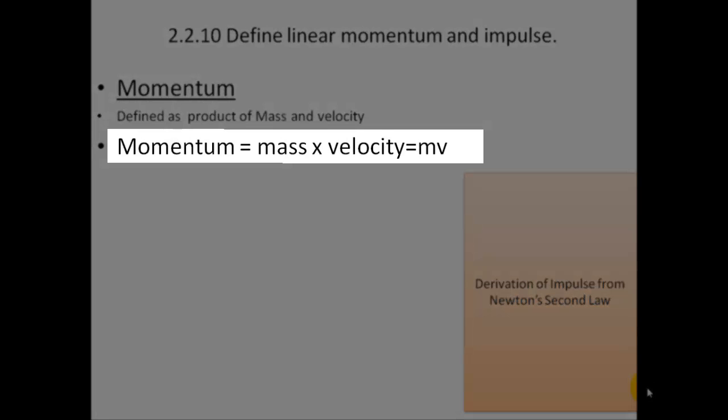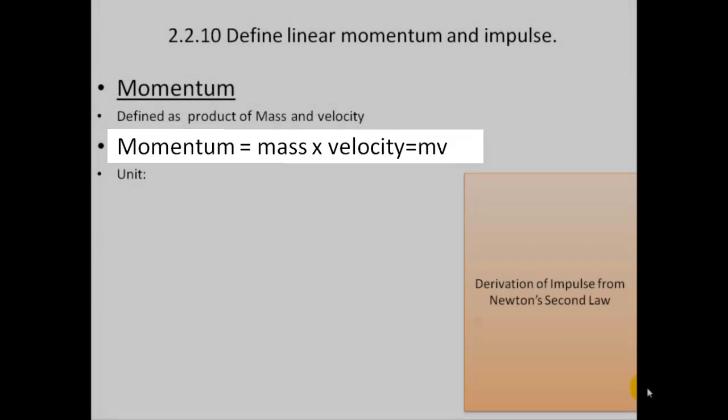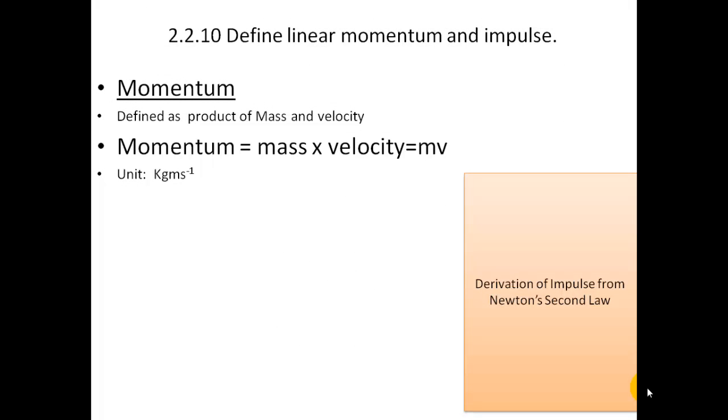So it's equal to the mass times by the velocity. This is the momentum. Nothing else will get you the marks. Mass times velocity. Mass is in kilograms. Velocity is meters per second, so the unit is kilograms meters per second.